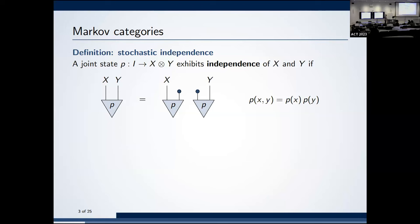A joint state with two outputs exhibits independence of those two outputs if it is the product of the marginals. The marginals are formed by discarding what you're not interested in — in FinStoch that amounts to summing over y, or integrating over y in the continuous case. A joint state is splittable into this product if it denotes independence, and in general x and y are random, but knowing x has something to tell you about y.